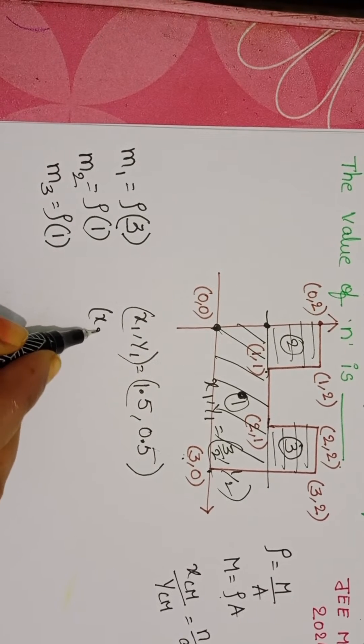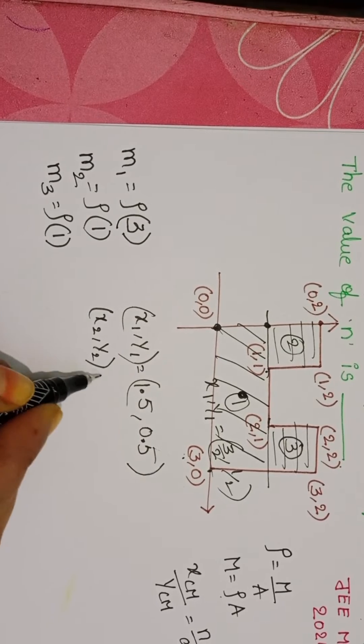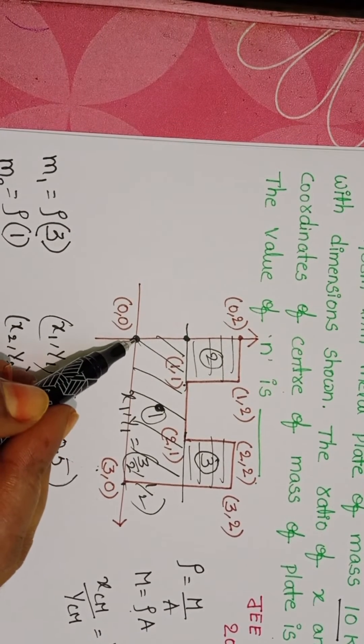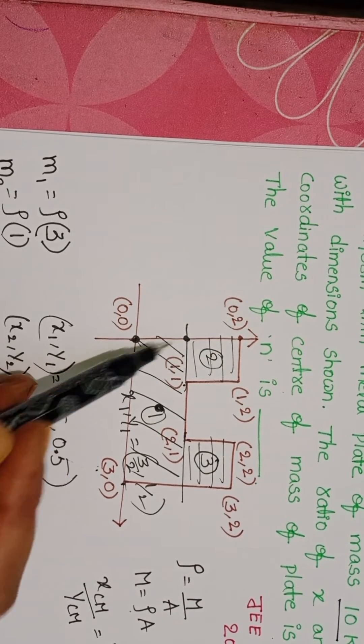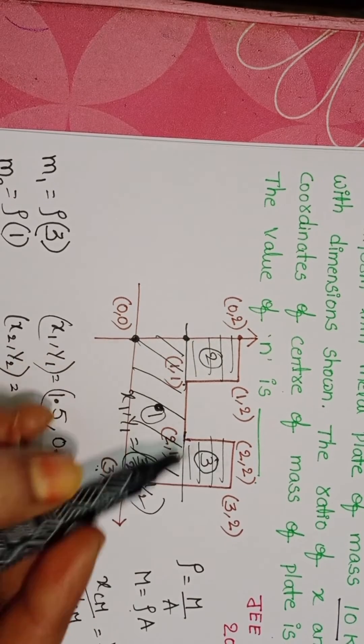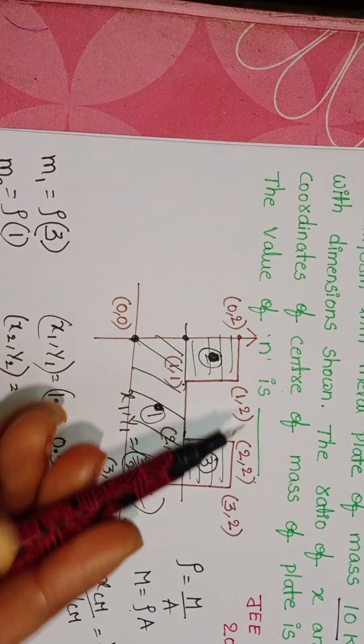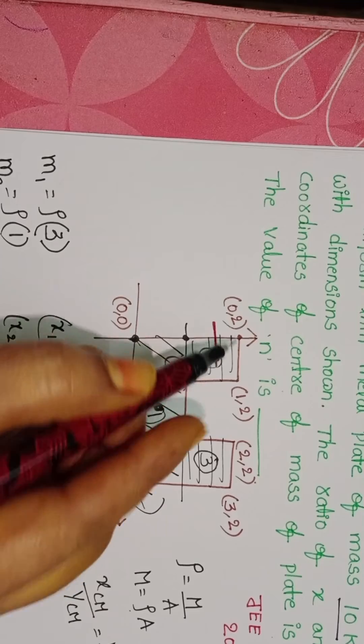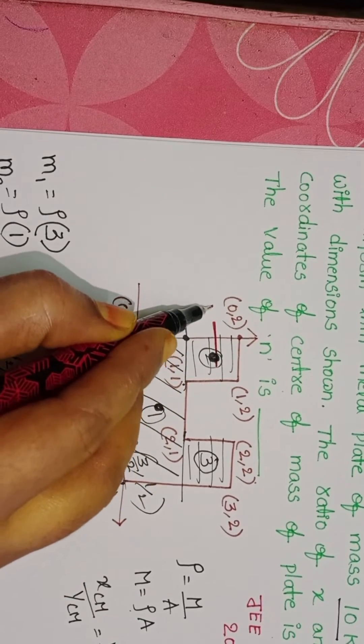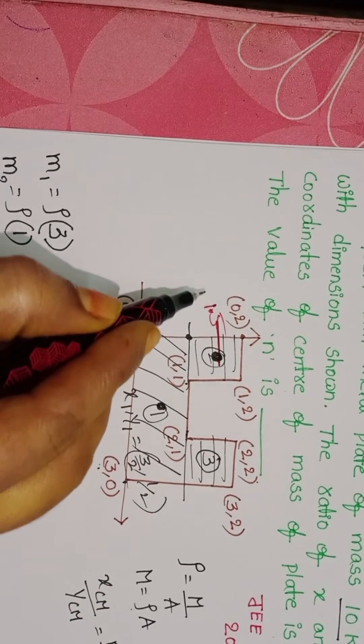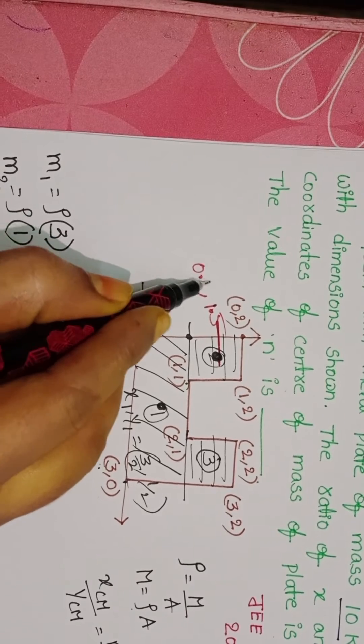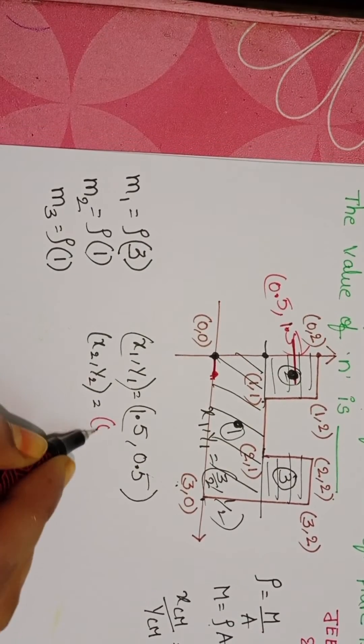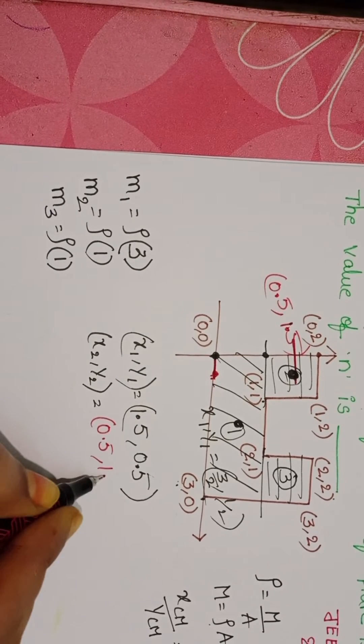Now find out the position of center of mass of the second part. Always take the position of center of mass from the reference point or here from the horizon. This is the position of the center of mass. From horizon to this point, y coordinate is 1.5, x coordinate equals 0.5. 0.5 comma 1.5.